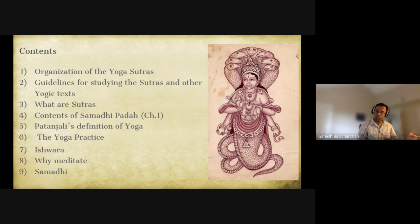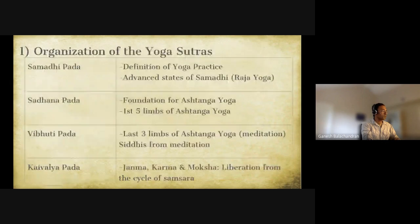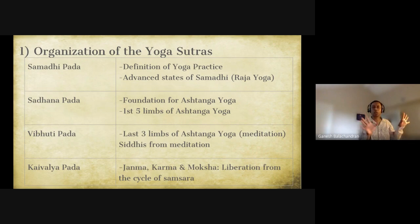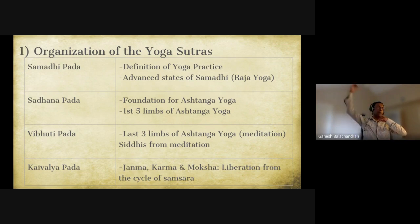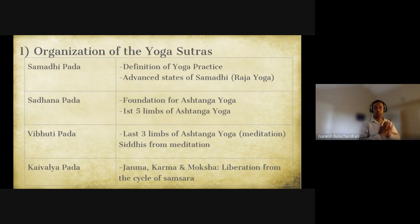In this overview presentation I will cover the first chapter and a portion of the second chapter. There are four chapters in the Yoga Sutras. The first is the Samadhi Pada, the chapter on samadhi, where Patanjali defines what yoga practice is all about and then goes into advanced states of samadhi. This chapter is also called the Raja Yoga chapter — Raja Yoga is the samadhi yoga, advanced practice.